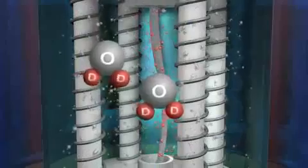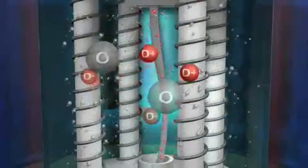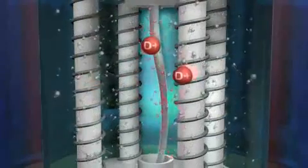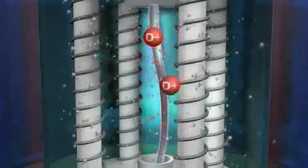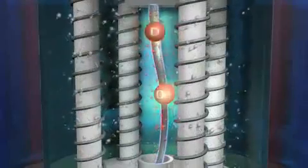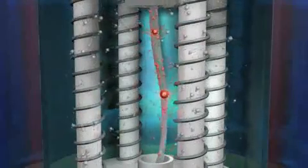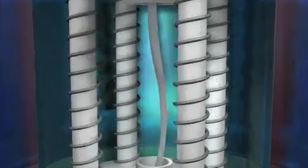Meanwhile, the D positive ions are attracted to the negatively charged palladium cathode where they quickly find an electron on the surface of the cathode to neutralize their charge. This cathode is made of palladium atoms arranged in a face-centered cubic lattice.